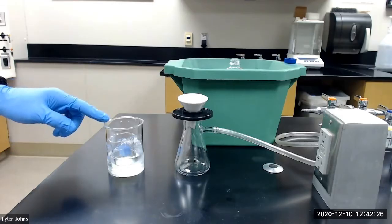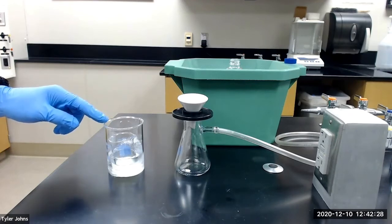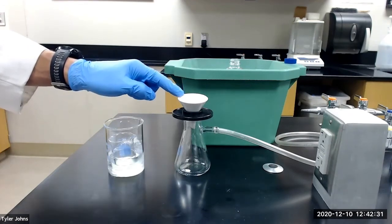After crystallization has completed, we will collect the crude benzil product by using vacuum filtration with a Hirsch funnel.